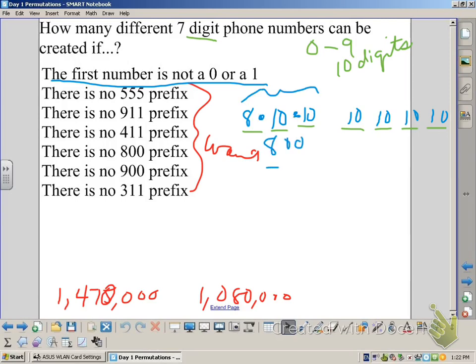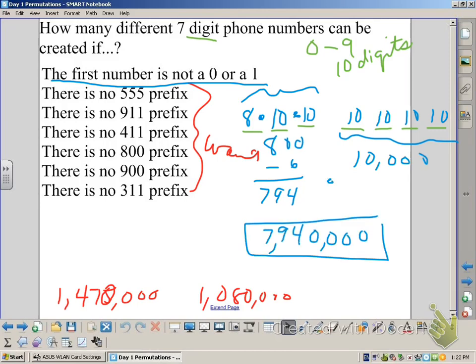So we have 800 possible prefixes. But then we had those other prefixes that didn't work, so we should subtract them out. There were six that didn't work. That leaves us with 794 prefixes, times 10,000, for a total of 7,940,000.